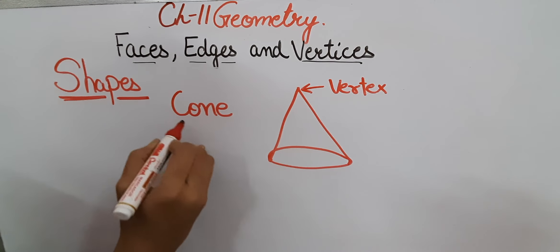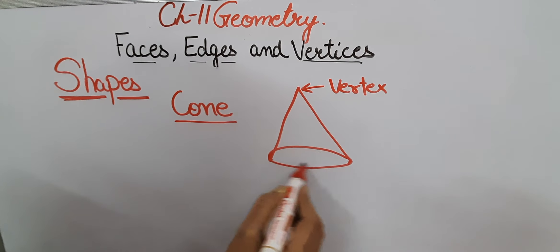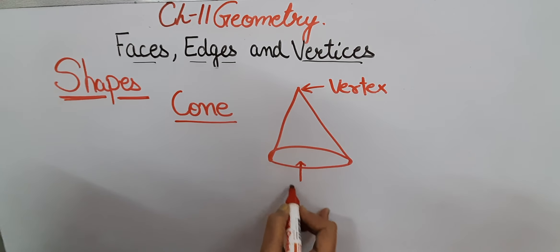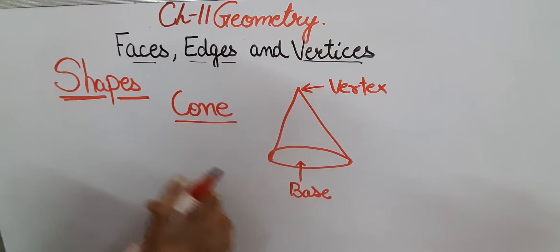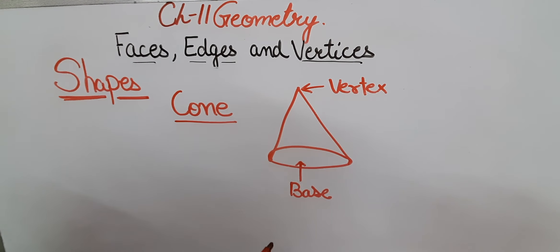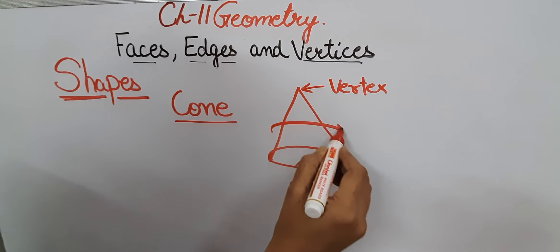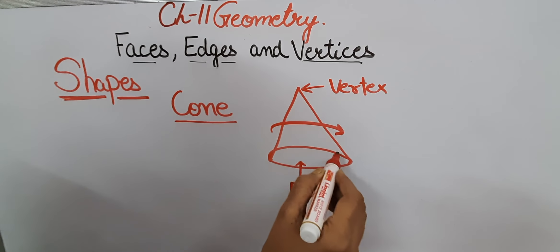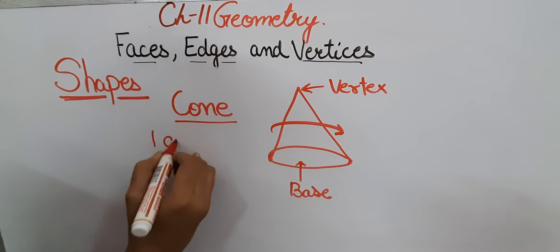Now this is a cone. A cone has only one plane surface, and this plane surface is the base of the cone. It has only one plane surface. Similarly, it has only one curved face — the side surface is curved, so it has one curved face.